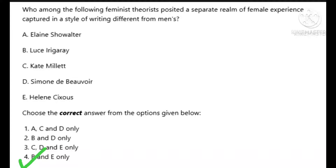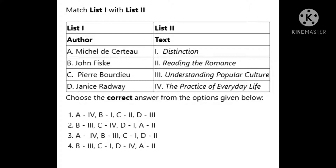The next question is again a match-type question. We have to match list one to list two. The right answer is option number three. Michel de Certeau has given the text The Practice of Everyday Life, John Fiske has given Understanding Popular Culture, Pierre Bourdieu has the text Distinction, and Janice Radway is given the text Reading the Romance.